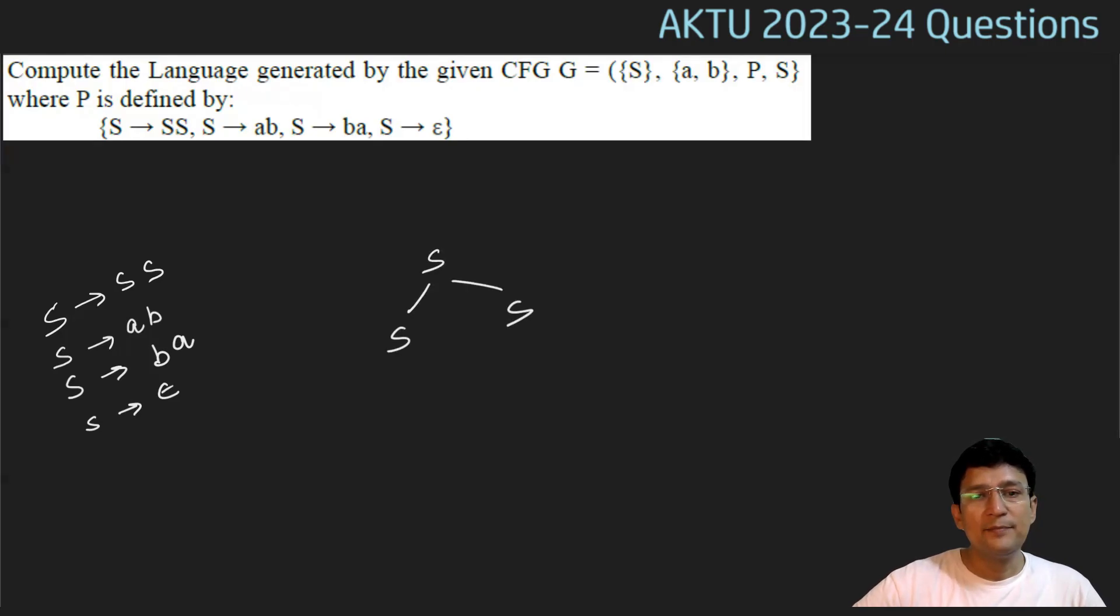Let's see one derivation. So, S produces SS. From this S we generate AB. From this S we generate BA. So, the string which is getting generated by this is ABBA.